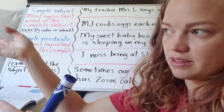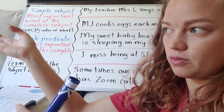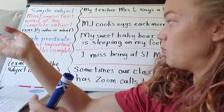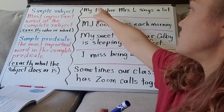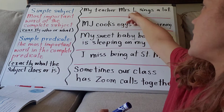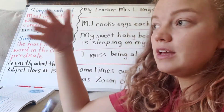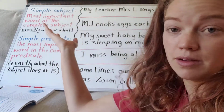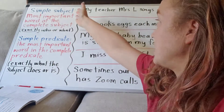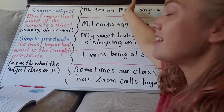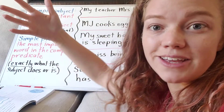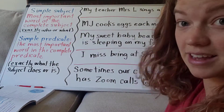So an example could be: My teacher Mrs. L sings a lot. The complete subject would be 'my teacher Mrs. L' and the complete predicate would be 'sings a lot.'